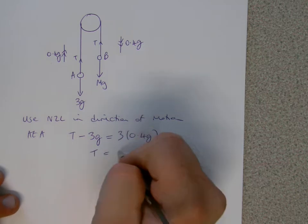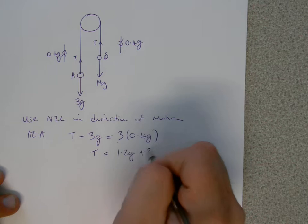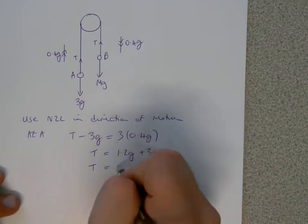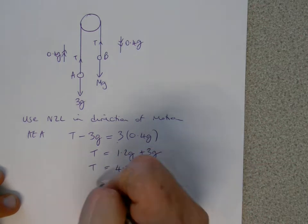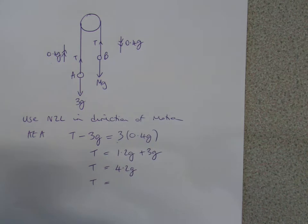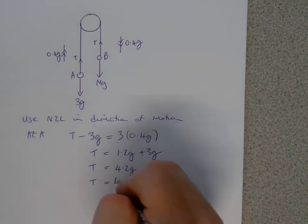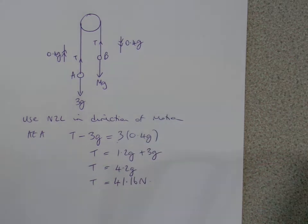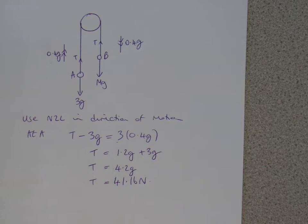So T will equal, 3 times 0.4 is 1.2G, plus then 3G, so T will equal 4.2G, so T will equal 4.2 times 9.8, and we get out 41.16 newtons. So that's the tension then in the string.